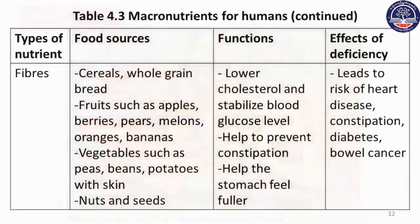Fibers are found in whole grain bread, fruits such as apples, pears, melons, and oranges, and vegetables including peas, beans, and potatoes with skins.